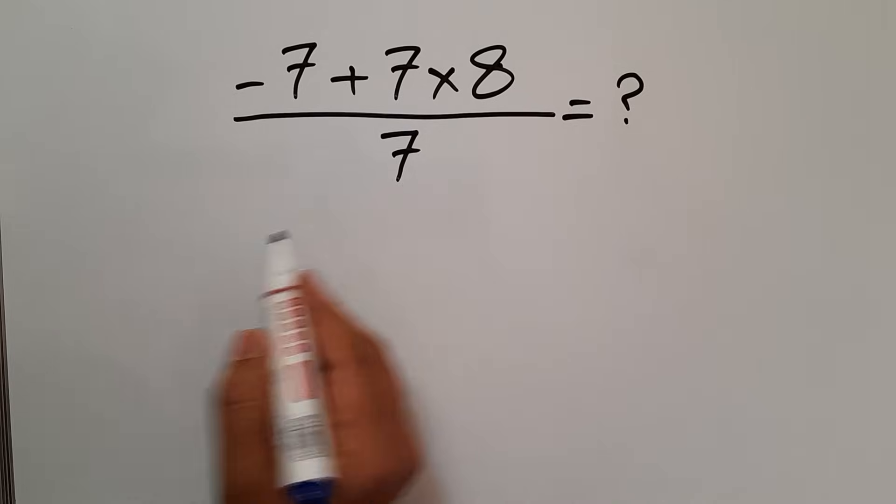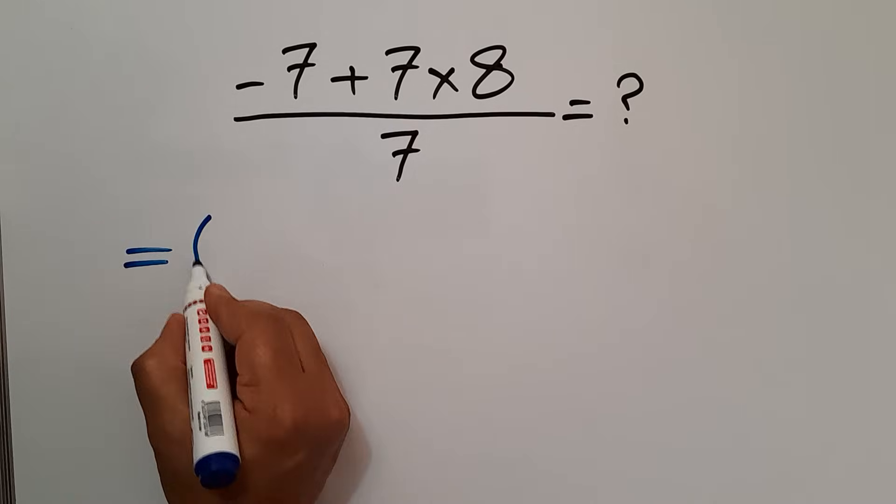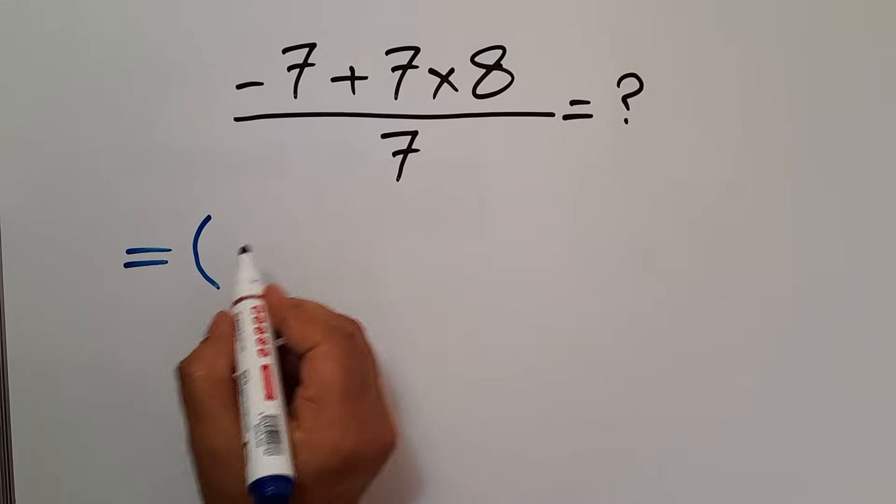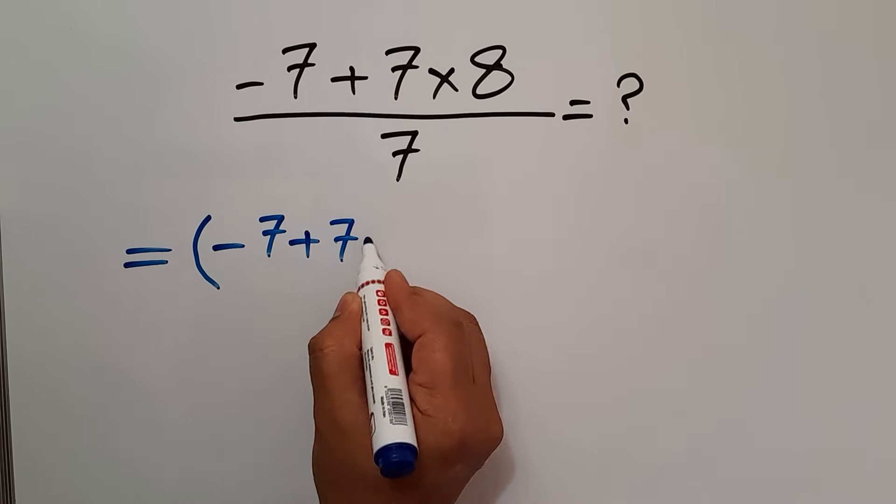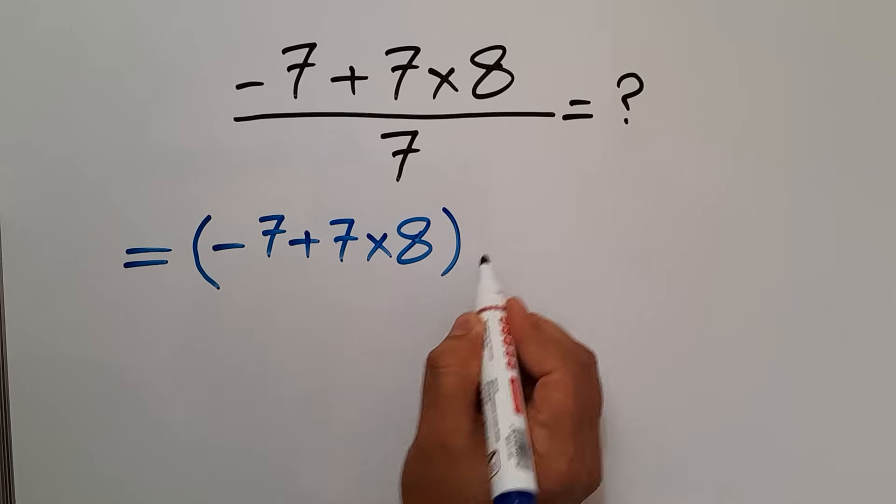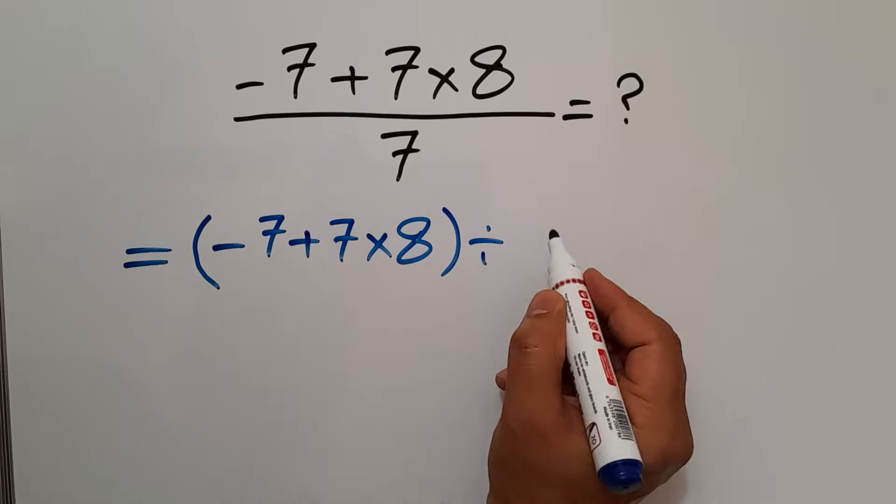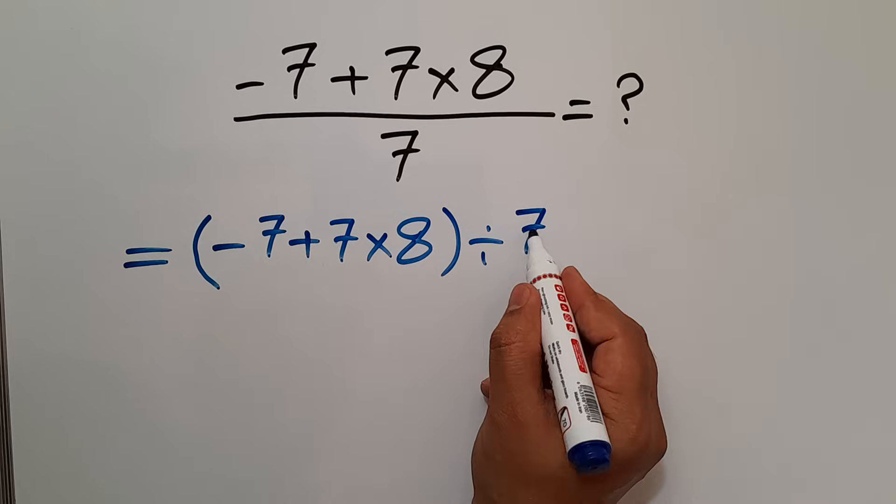Instead of this fraction, we can write parentheses, the numerator, negative 7 plus 7 times 8, divided by the denominator, which is 7.